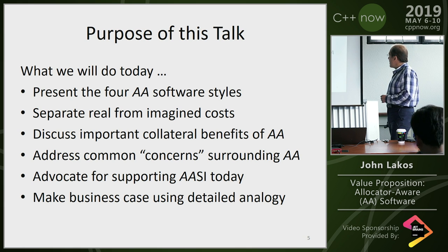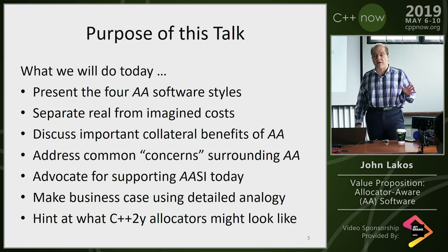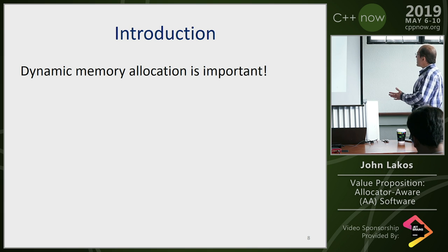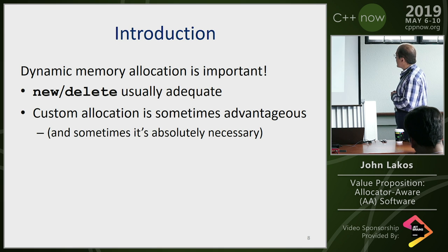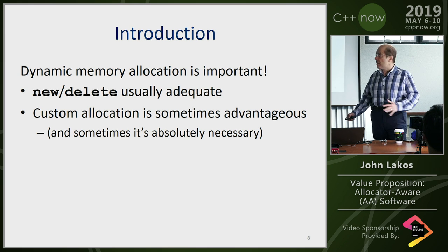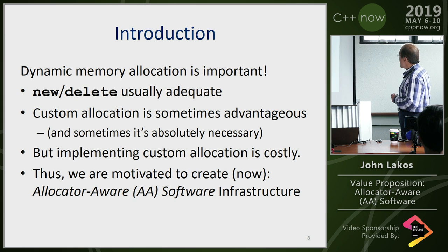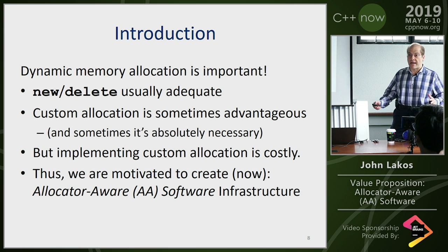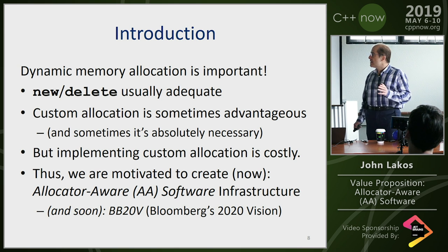What we're going to do today is present four allocator-aware styles, separate real from imagined concerns, discuss important collateral benefits, address common concerns around allocator awareness, and advocate for supporting allocator awareness for software infrastructure today. We'll make a business case using a detailed analogy. I'll also hint at something that's going to make all of this almost moot, but we have to go through the exercise.